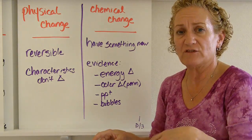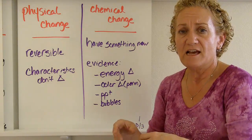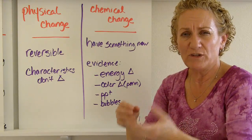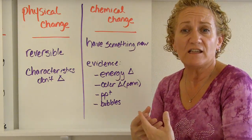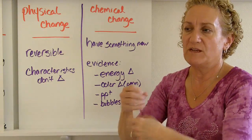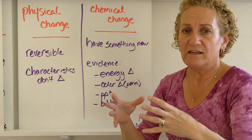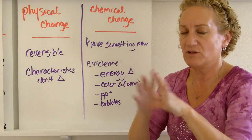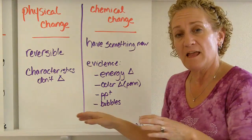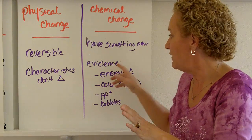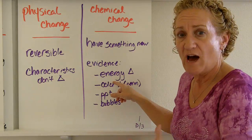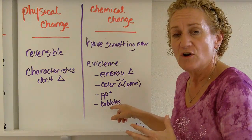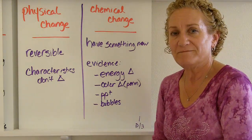The last sign is effervescence — bubbles or gases. It's like an Alka-Seltzer tablet fizzing, or like a Coke when you open it and it fizzes. That's evidence of a chemical reaction. So to summarize, the evidence of a chemical reaction includes: energy change, permanent color change, a precipitate forming, or effervescence — bubbling.